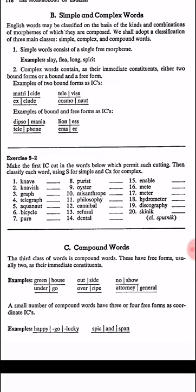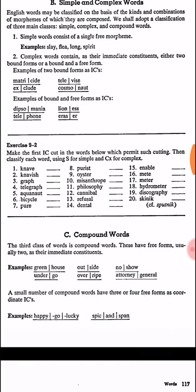The complex word has more than one morpheme — has two morphemes, one of them is free and the other one is bound, or both of them are bound. بالنسبة للـ complex، تحتوي على مورفيمين: واحد free — يعني بي معنى — والثاني bound — ما بي معنى — أو الاثنين bound.